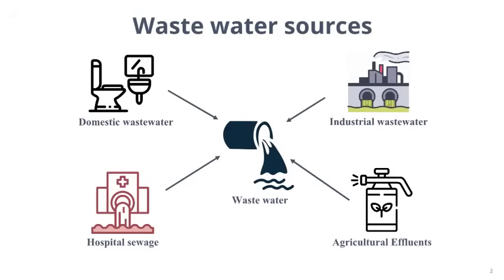Domestic wastewater contains nitrogen and phosphorus from human waste, food, and certain soaps and detergents. They are categorized into two main types. Grey water is generated from sinks, showers, bathtubs, washing machines, and dishwashers. Black water is generated from toilets and urinals.